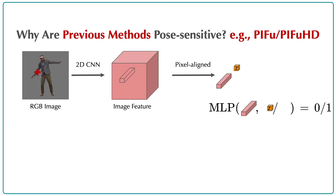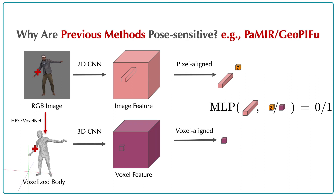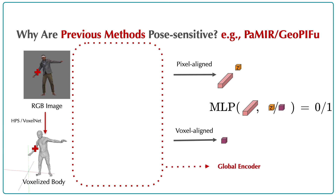Let's look at why previous methods are sensitive to pose variation. Given a colored input image, PIFu and PIFu HD apply a deep 2D encoder and feed the extracted pixel-aligned features to a reconstruction MLP. PaMIR and GeoPIFu introduce an additional 3D body prior, represented as body voxels encoded by a 3D deep encoder. Then the voxel-aligned features are fed into the reconstruction MLP.